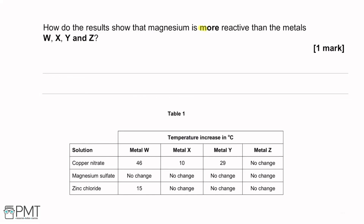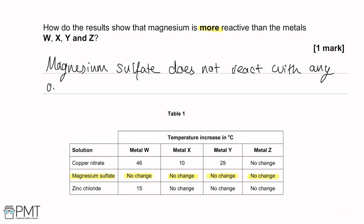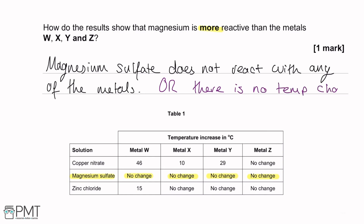How do the results show that magnesium is more reactive than metals W, X, Y, and Z? We need to look at the reactions with the magnesium sulfate solution. There is no temperature change when magnesium sulfate reacts with any of the metals. So our answer is: magnesium sulfate does not react with any of the metals, therefore magnesium is more reactive. An alternate point is to say there is no increase in temperature with any of the metals.